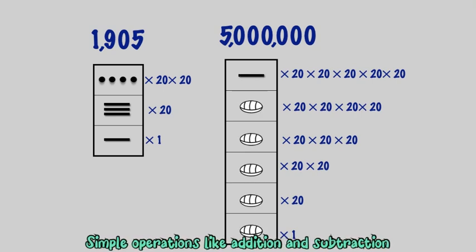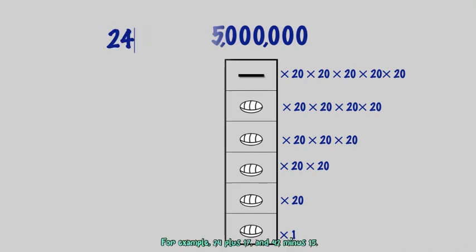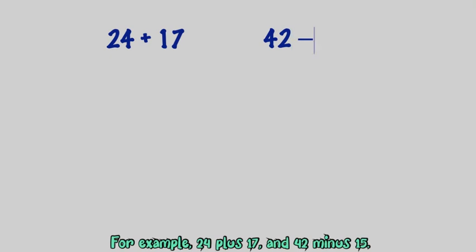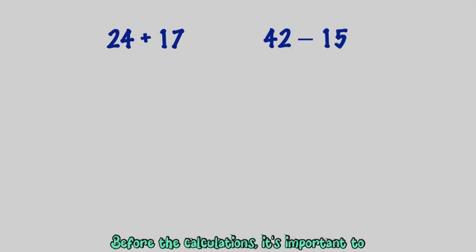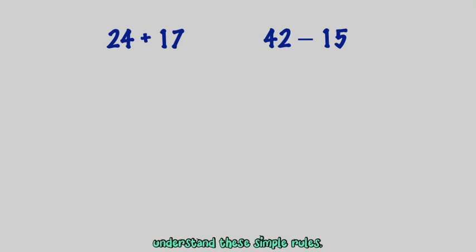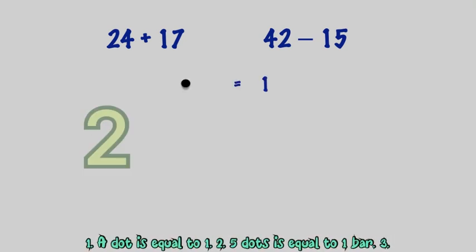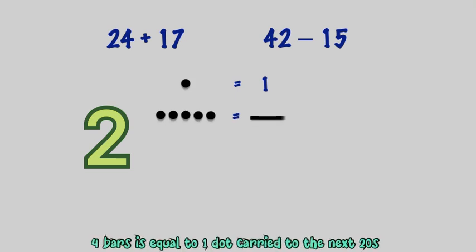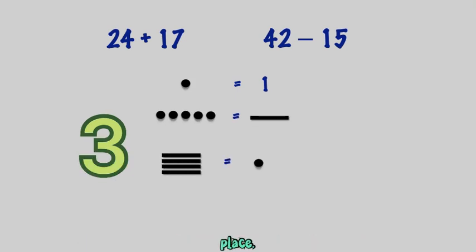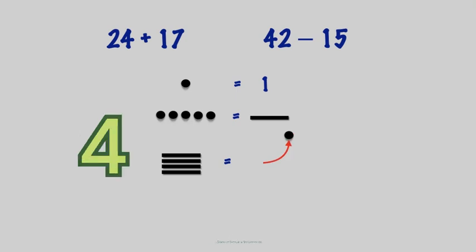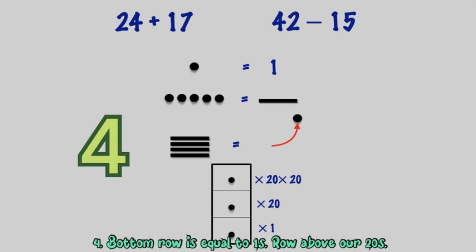Simple operations like addition and subtraction were systematic and clear. Before the calculations, it's important to understand these simple rules: one, a dot equals one; two, five dots equals one bar; three, four bars equals one dot carried to the next 20s place; four, the bottom row equals ones, and the row above equals 20s.